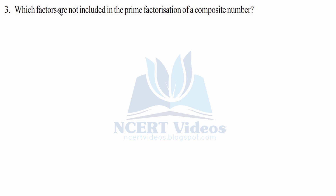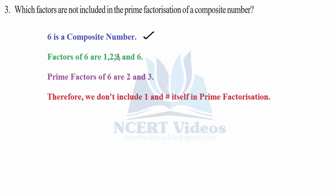Question 3: Which factors are not included in the prime factorization of a composite number? For example, 6 is a composite number and its factors are 1, 2, 3, and 6. The prime factors of 6 are 2 and 3. We do not include 1 and the number itself in the prime factorization, so for 6 we exclude 1 and 6.